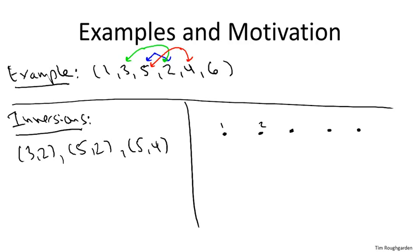Pictorially, we can think of it thusly. We can first write down the numbers in order, one up to six, and then we can write down the numbers again, but ordered in the way that they're given in the input array. So one, three, five, two, four, six. And then we can connect the dots, meaning we connect one to one, we connect two to two, and so on.